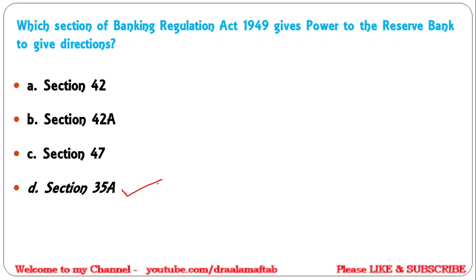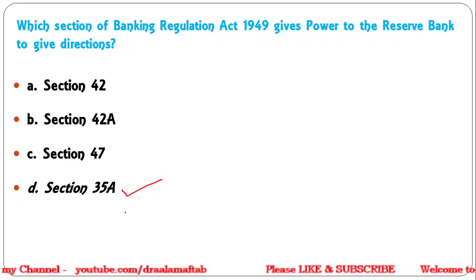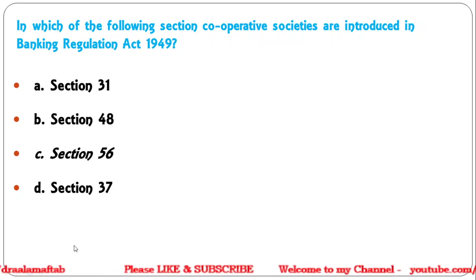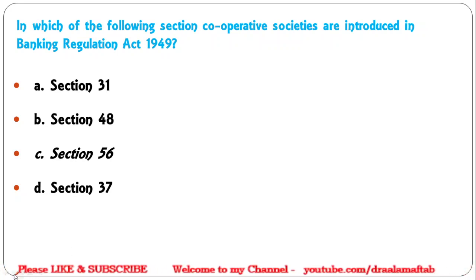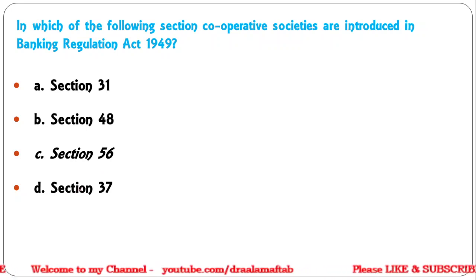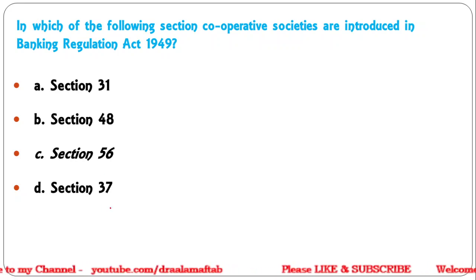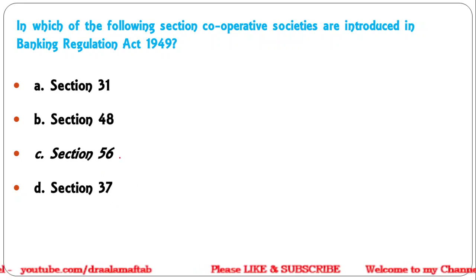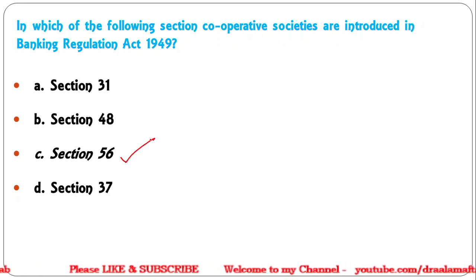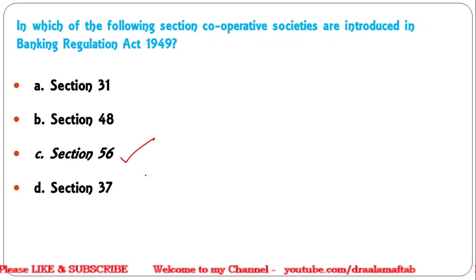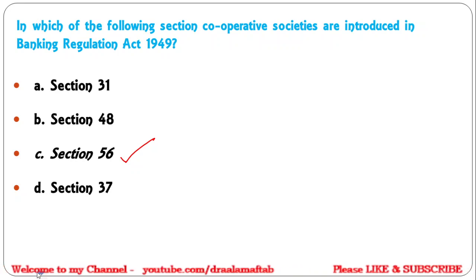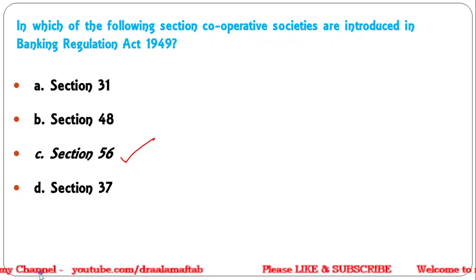Next question: In which section were cooperative societies introduced into the BR Act 1949? Options: Section 31, Section 48, Section 56, or Section 37. The correct answer is Section 56, because there are 56 total sections. Section 56 was the section added to include cooperative banks and cooperative societies.